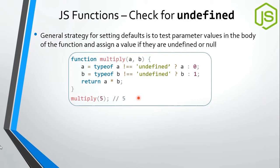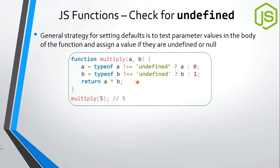A good practice in JavaScript is to check whether arguments are undefined. When a variable is declared but not initialized, it is undefined. We can use typeof to check the type of a parameter — if no value has been assigned, it contains undefined. So in the multiply function algorithm, we check if a is undefined and if b is undefined, and in that case, assign a default value. This is one way of assigning default values in vanilla JavaScript.